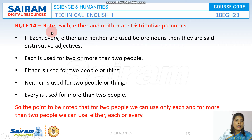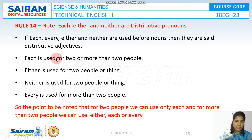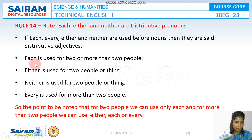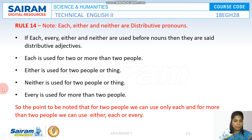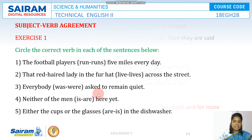Each, either, and neither are distributed nouns. Each is used for two or more people. Either is used only for two people. Neither is used for two people. Every is used for more than two people. Please keep this in mind whenever you use these words.